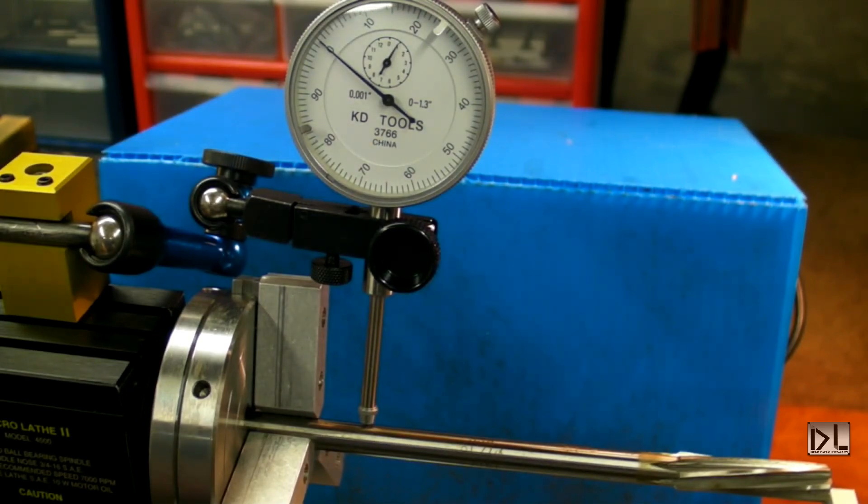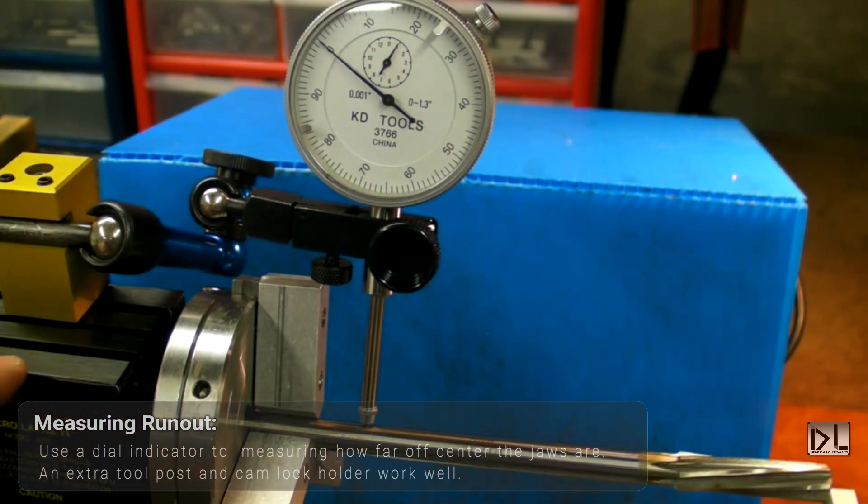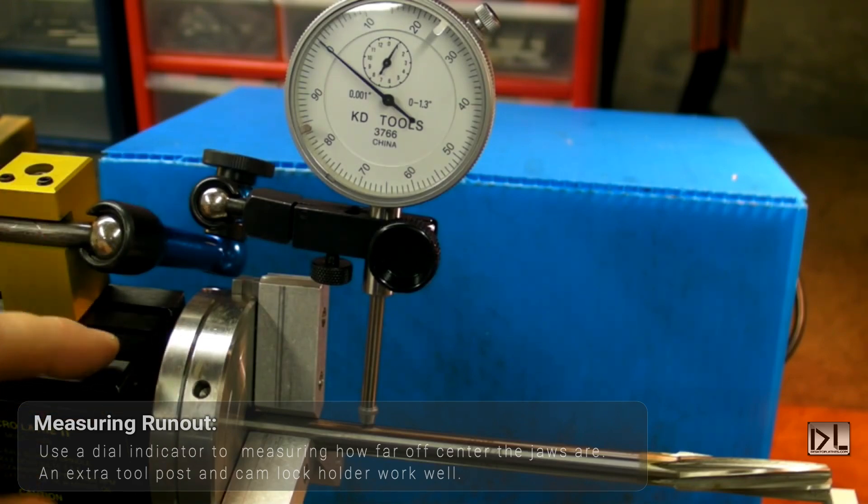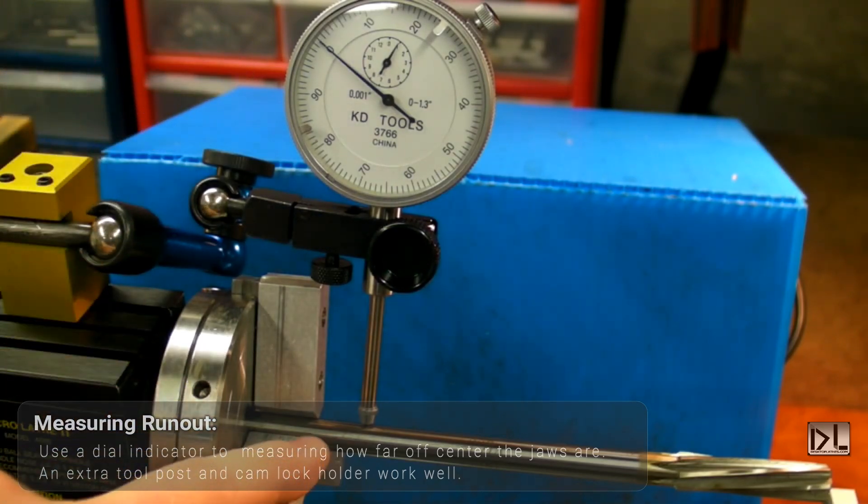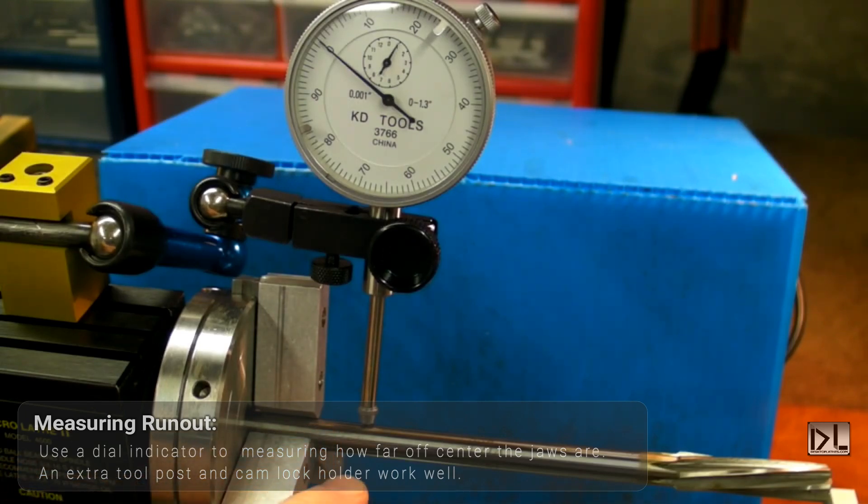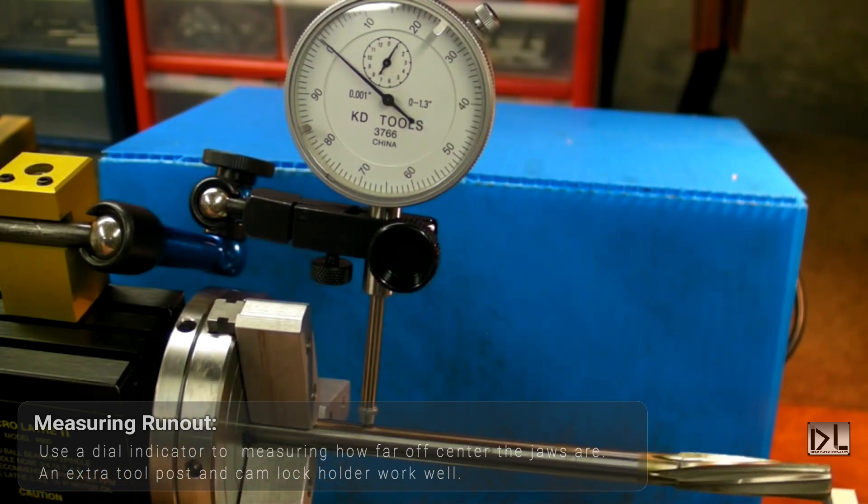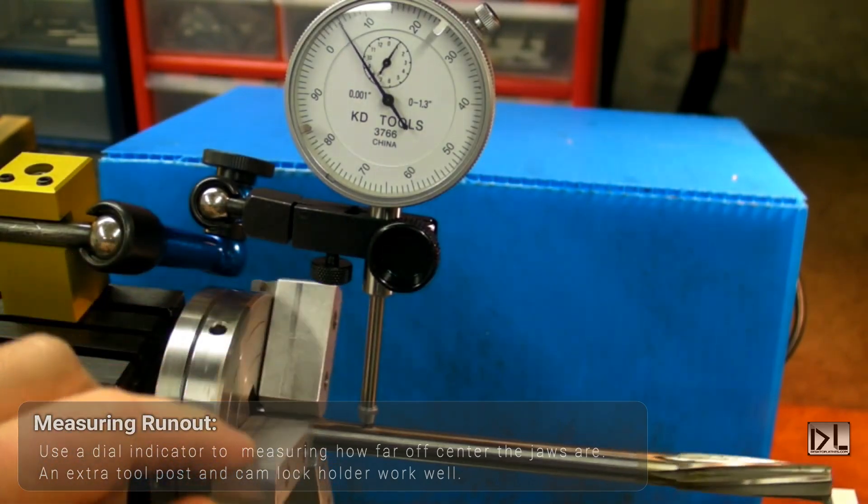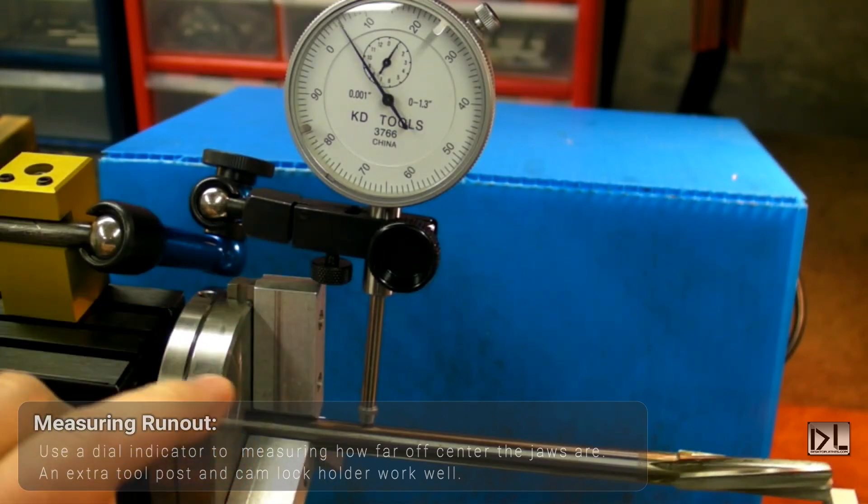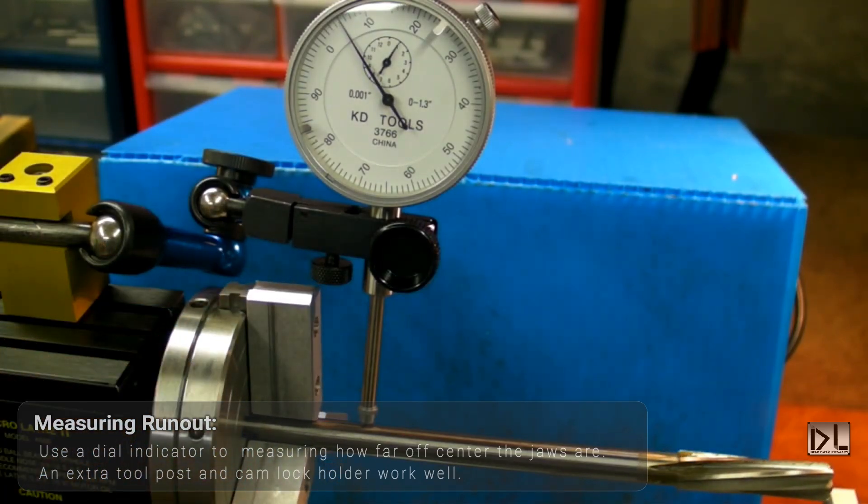Okay, this will demonstrate why the soft jaws need trued up. I've got the chuck installed on the lathe and a dial indicator mounted with the regular tool post here so that it's measuring the run out on this reamer that I've chucked into the jaws. Right now without any machining we're looking at the needle moving to about five and a half thousandths. Next we'll go ahead and do the machining operation and then check this again.